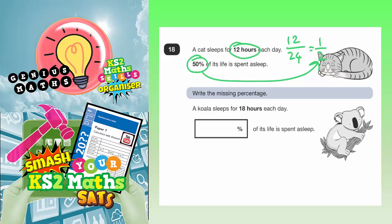And it says write the missing percentage. A koala sleeps for 18 hours a day, and we need to figure out what percentage of its life is spent asleep.